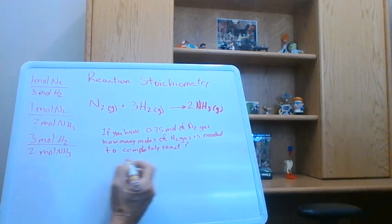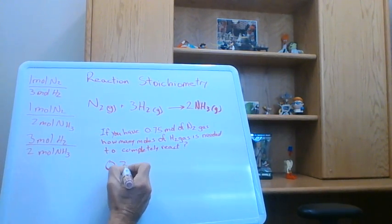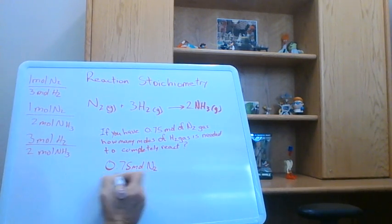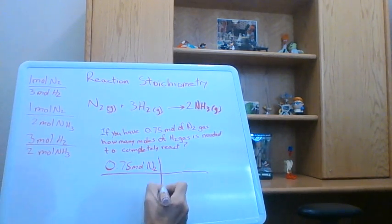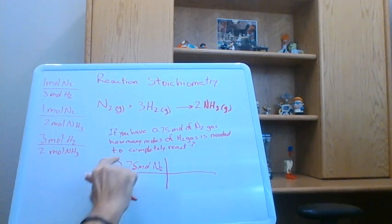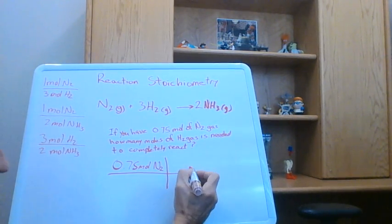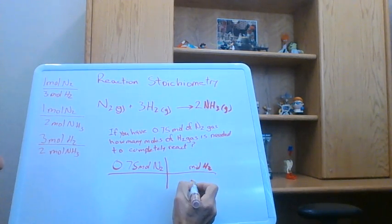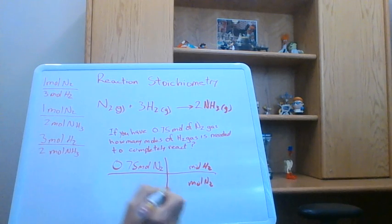So what we're starting with is we're starting with our 0.75 moles of nitrogen. And where we're headed, it says how many moles of H2. So we need to know the relationship between moles of H2 and moles of N2, right?